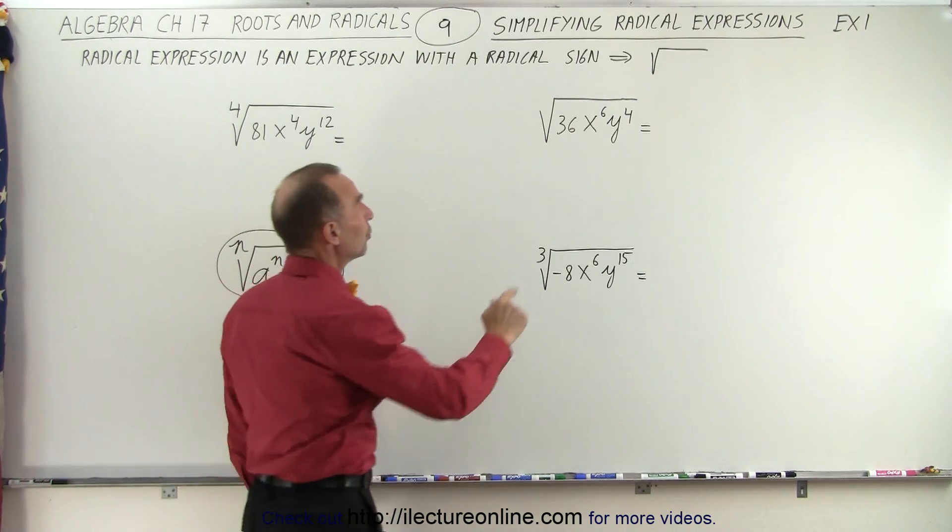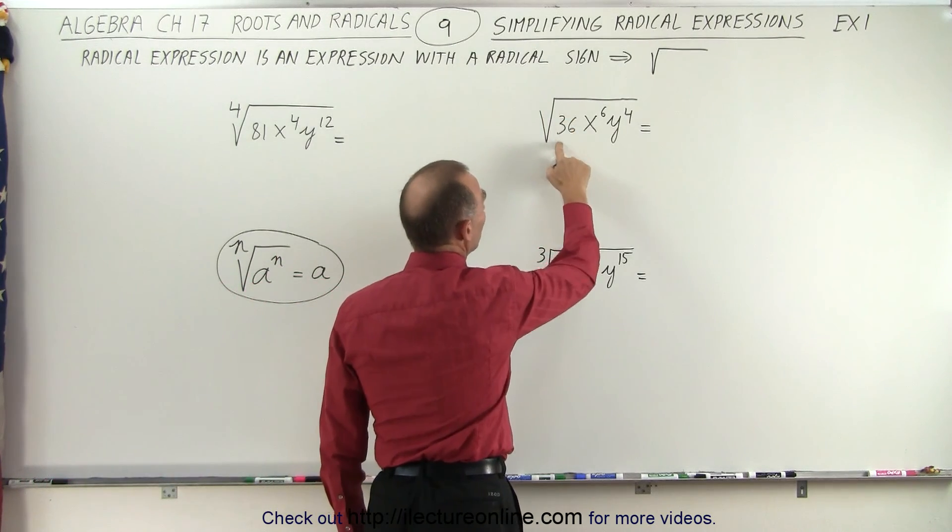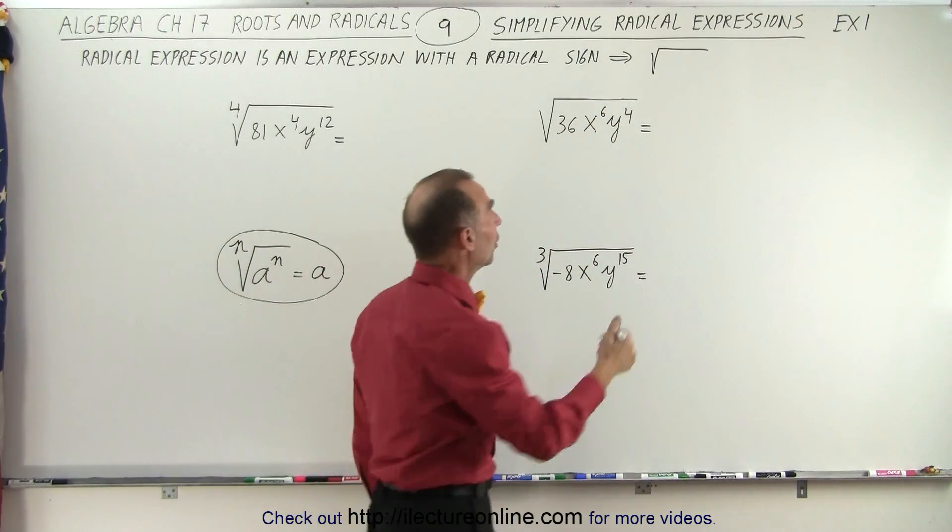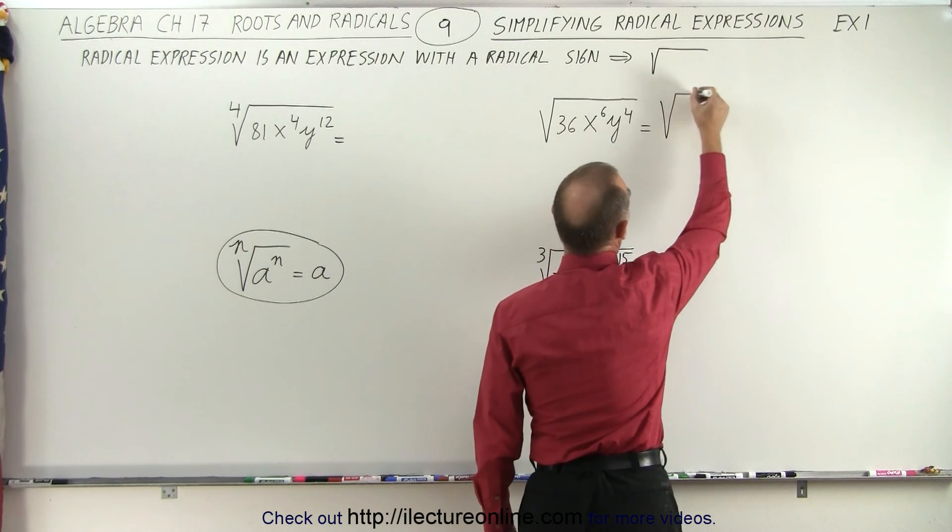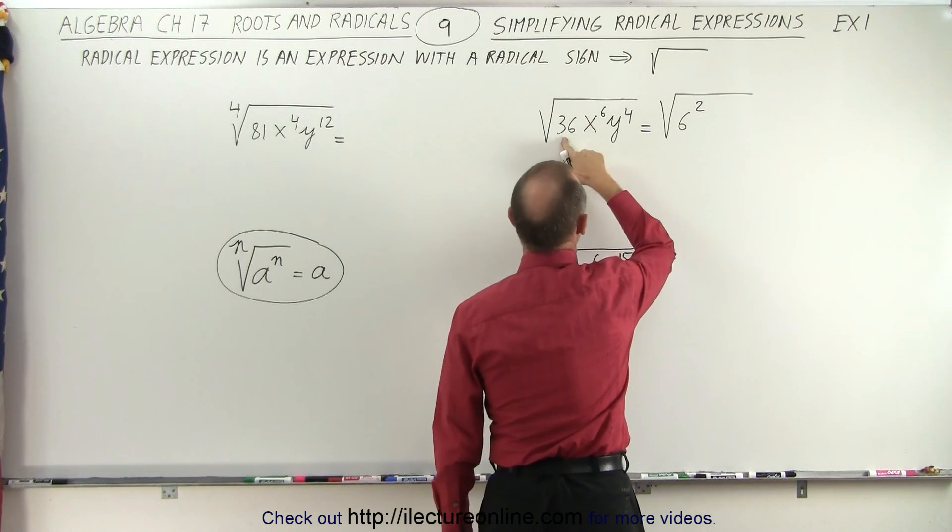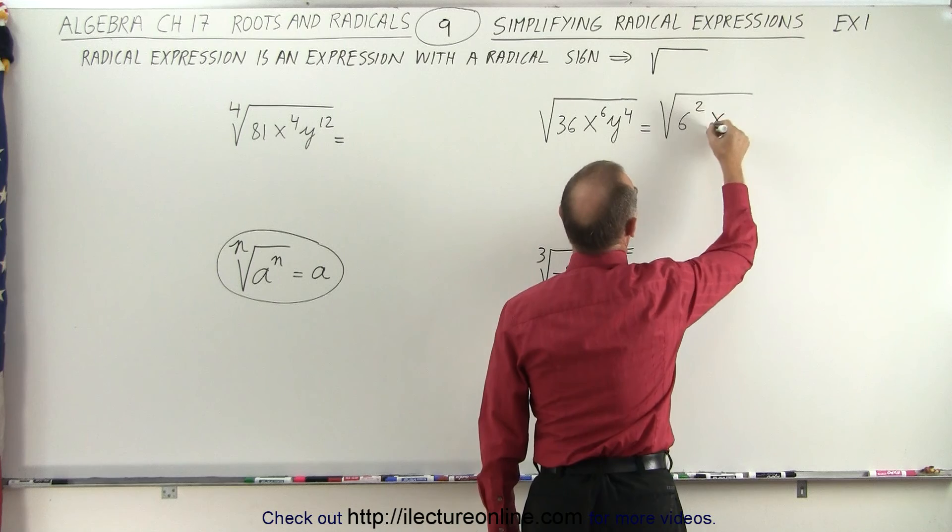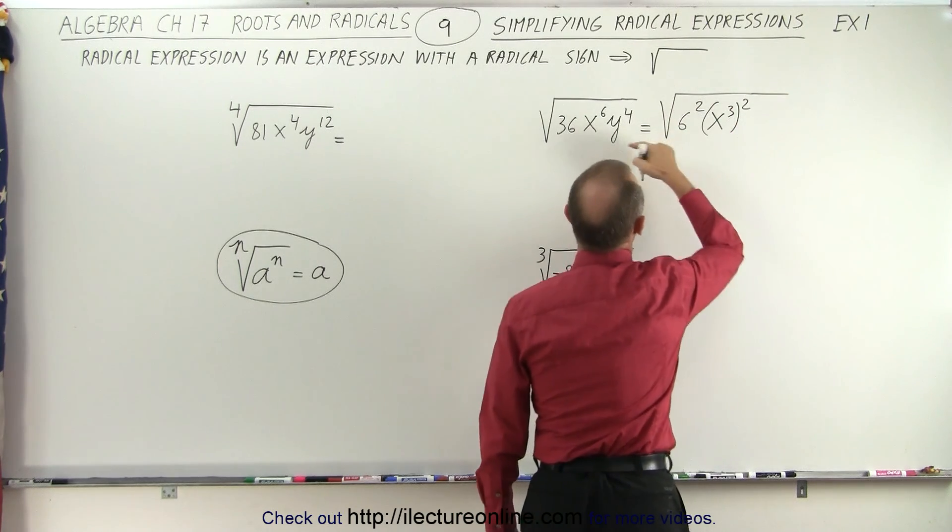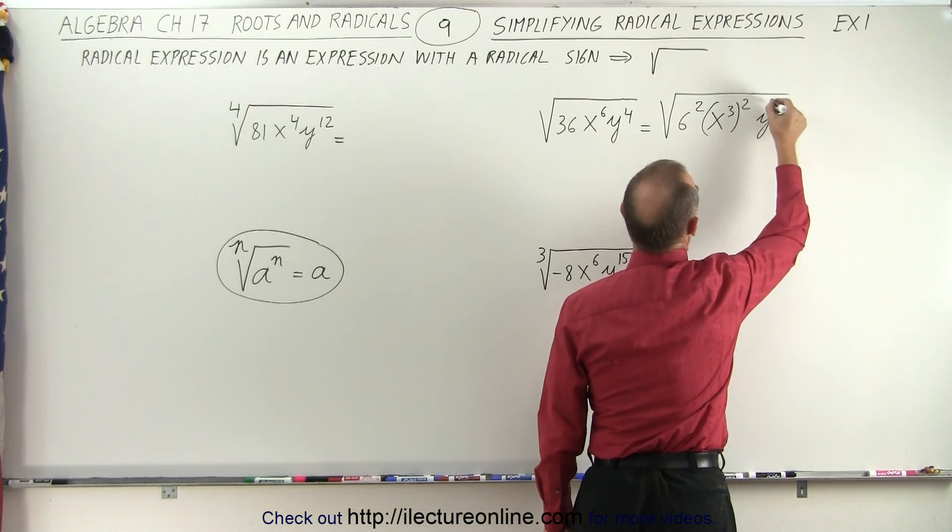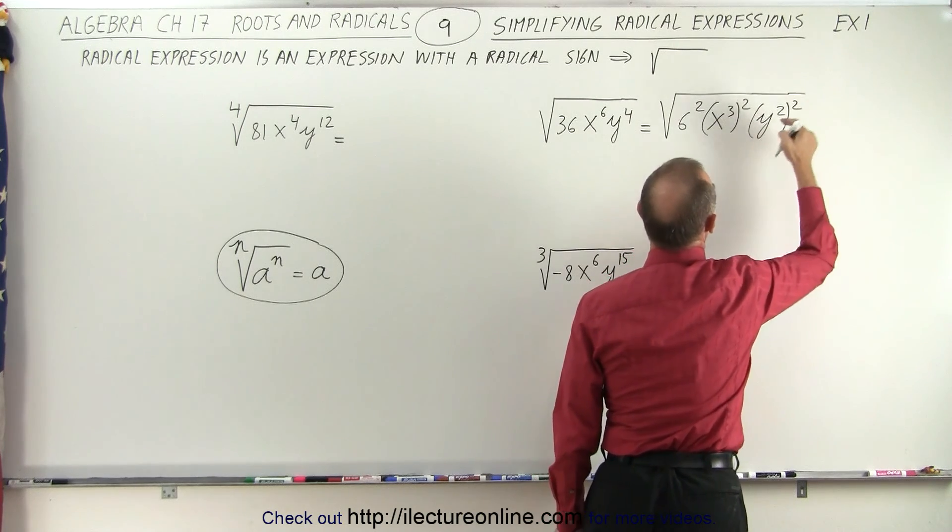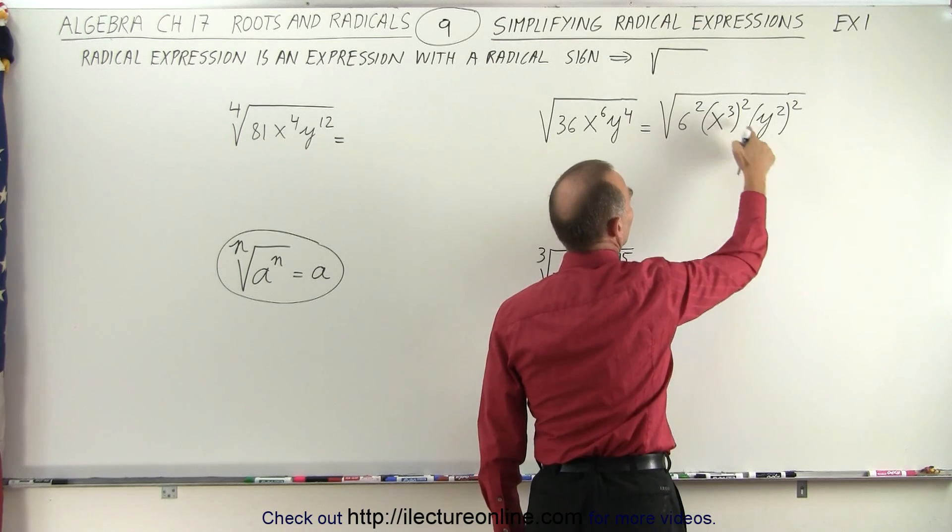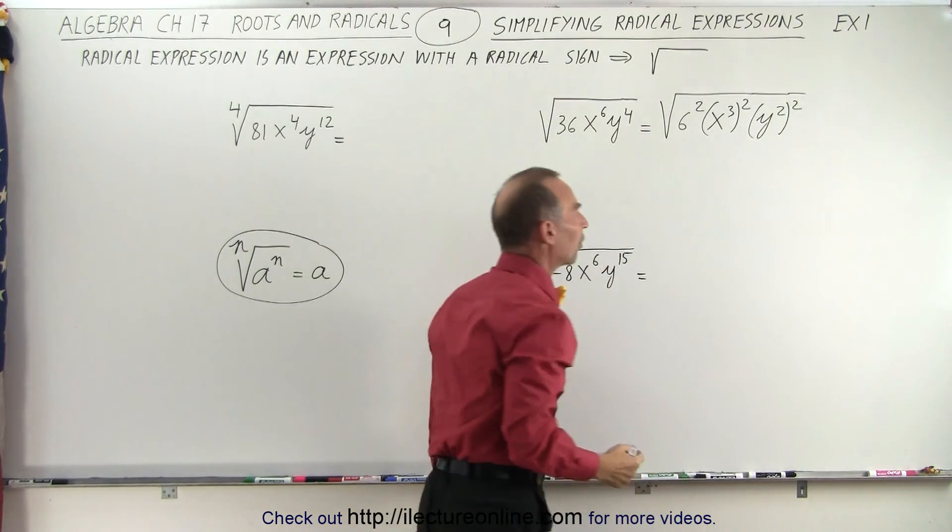For example, what we want to do if we take the square root of something, we want to see if we can write this in terms of something squared. And we could, we can write this as follows. We could write this as 6 squared instead of 36. Here we can write this as x cubed quantity squared. And here we can write this as y squared quantity squared. Because notice, with the exponential rules, x cubed squared gives us x to the sixth. y squared squared gives us y to the fourth.